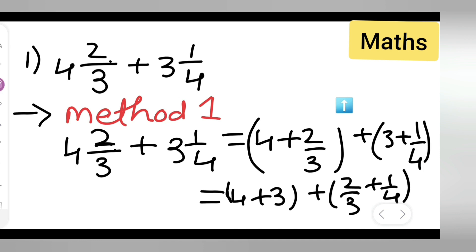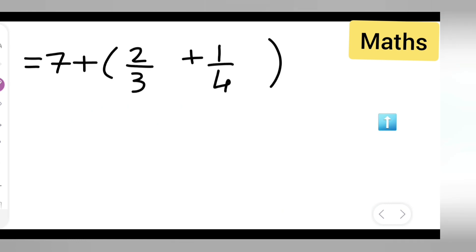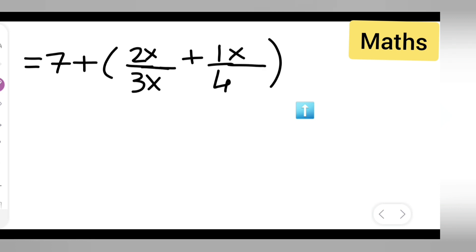Now 4 plus 3 gives you 7. So write down 7 plus the bracket with 2 upon 3 plus 1 upon 4. Now you have two different denominators, so you need to make them the same. To do that, multiply both the numerator and denominator: 2 upon 3 multiplied by 4, and 1 upon 4 multiplied by 3.